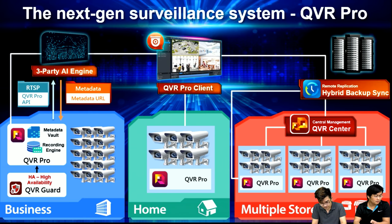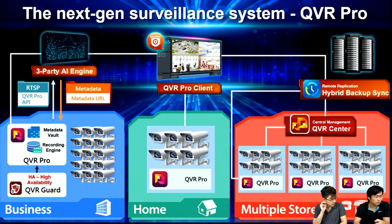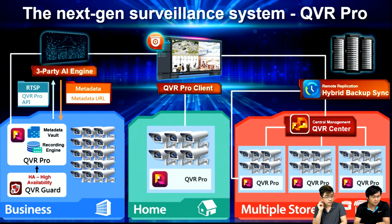I'm Allen. This diagram shows the product architecture of QNAP's surveillance system solution. Our latest solution can fit various users in various scenarios. It also provides third-party partner integration with QVR Pro. We have a high availability solution — the product on the lower left is called QVR Guard. We will introduce more scenarios for you later.